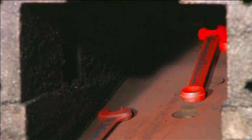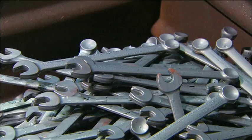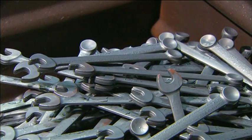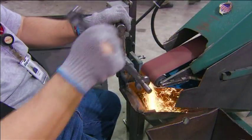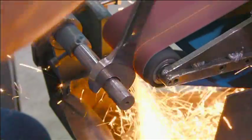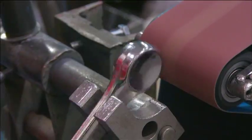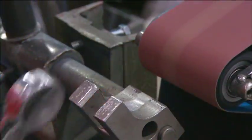The wrenches exit the forge press and cool off on their way into a collection box. A worker grinds off the trim line, a thin line of excess metal created when the top and bottom dies come together.